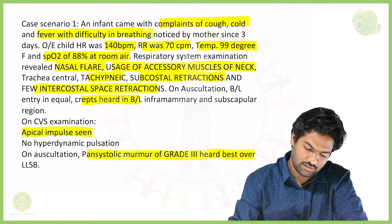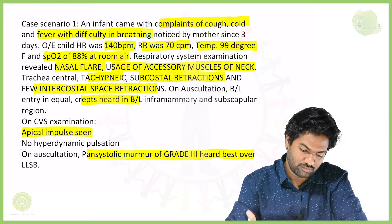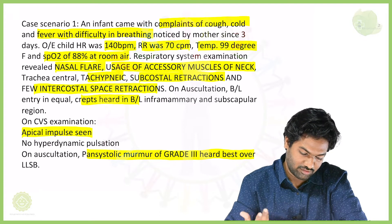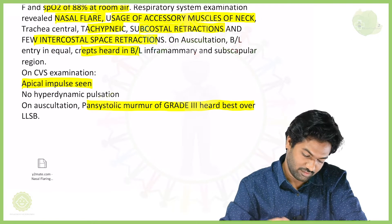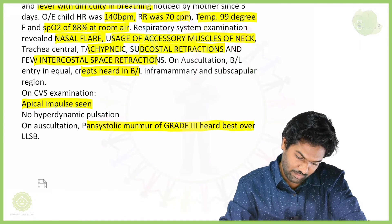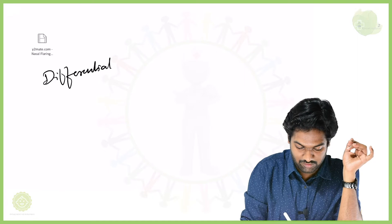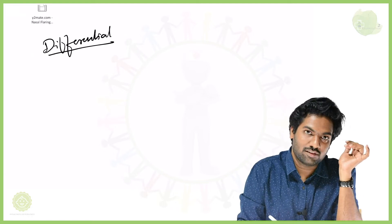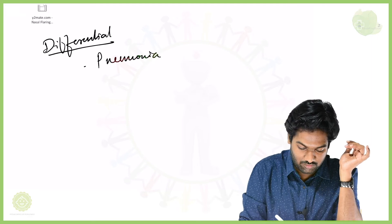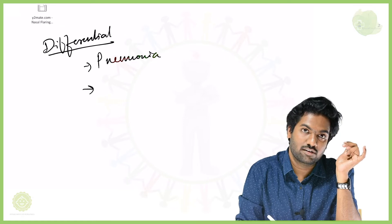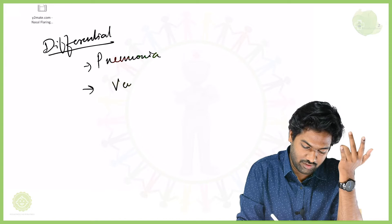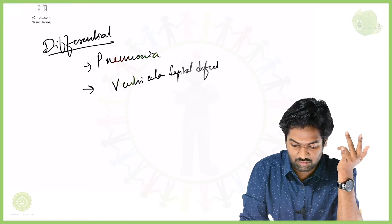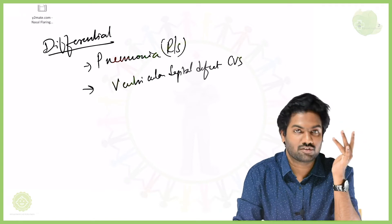Now what do you think of this case? The salient features are: cough, cold, fever, difficulty in breathing, heart rate of 140, respiratory rate of 70, temperature 99, fallen saturation, use of accessory muscles, and a pan-systolic murmur. Bilateral crepts were also heard. So if you want to write differentials, it is obvious — most probably either pneumonia, or given the pan-systolic murmur, some atrial or ventricular septal defect. So it's either a respiratory cause or a cardiac cause.